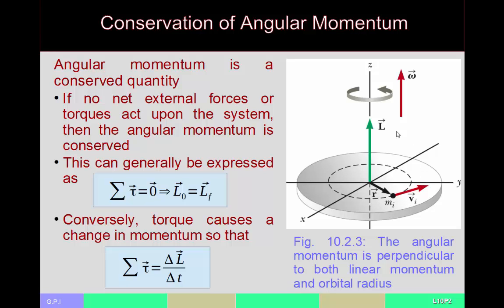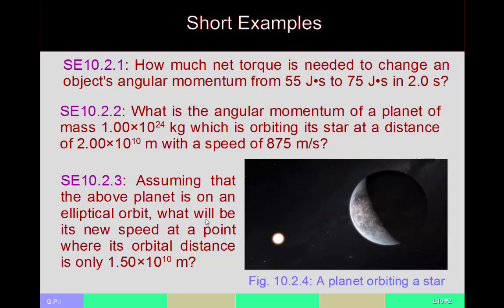If you were to drop some object onto the disk so that the disk's mass and hence its moment of inertia increases, the result would be that although the angular momentum is conserved, the disk would slow a little bit — just enough to keep the angular momentum the same. Let's look at a couple of examples of that.